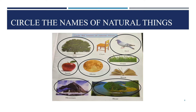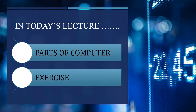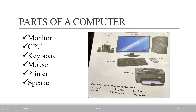So in the previous lecture we studied the definition of computer, what are man-made things, what are natural things, and we also did the circle exercises. Now in today's lecture, what will we learn? The parts of the computer and the exercise from chapter number 3. I am taking this picture from your third standard textbook.